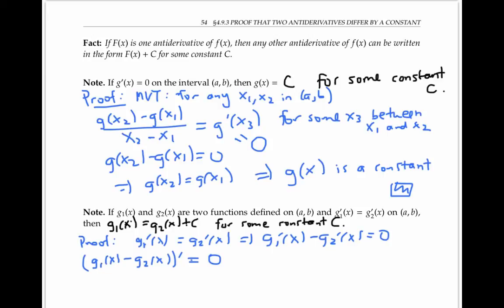Our previous statement tells us that if the derivative of a function is zero, the function must be a constant. And therefore, g₁(x) minus g₂(x) equals C for some constant C, which means that g₁(x) is equal to g₂(x) plus C, which is what we wanted to prove.